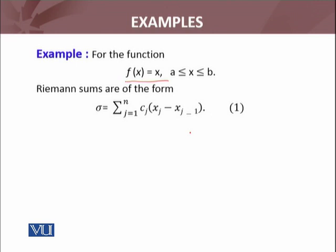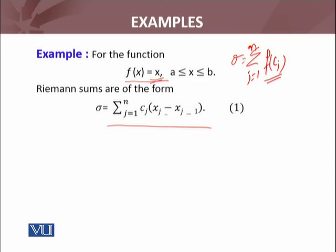We evaluate the Riemann sum for f(x) = x. The Riemann sum equals summation from j = 1 to n of f(cj) times (xj - xj-1). Since f is the identity function, f(cj) = cj. So the Riemann sum equals summation of cj times (xj - xj-1), where (xj - xj-1) is the length of the j-th subinterval.